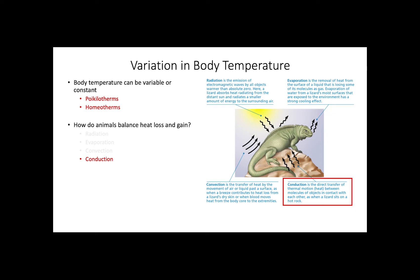An additional consideration in the variation of body temperature is the integumentary system of an animal, which includes the skin, hair, nails, or claws, and which often participates in the process of heat transfer.